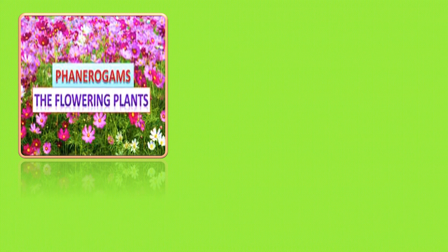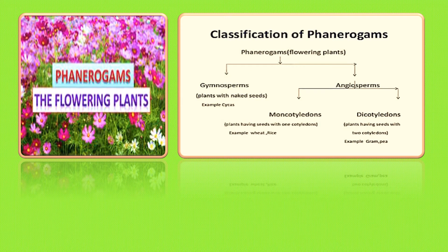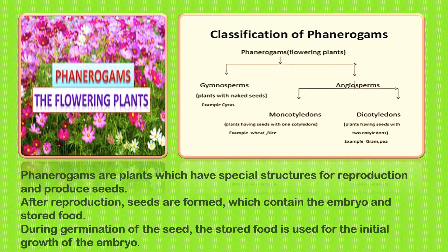Now we come to the flowering plants or phanerogams. Phanerogams are further divided into gymnosperms, which have naked uncovered seeds with no fruit around them, and angiosperms, which have the covering of the fruit over the seed. Phanerogams are plants which have special structures for reproduction and they produce seeds. After reproduction, seeds are formed which contain the embryo — the young one — and the stored food, which is used for the initial growth of the embryo during germination.